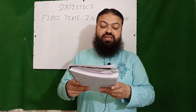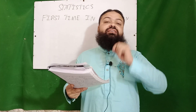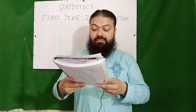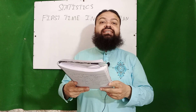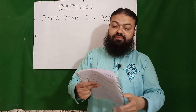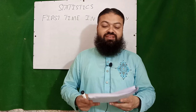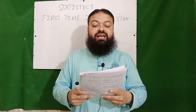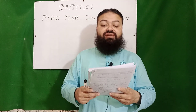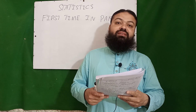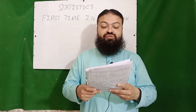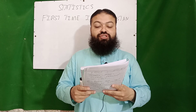Question number ten: Poisson distribution was invented by French mathematician Simon Denis Poisson in 1830; its function was developed and published in 1837. Question number eleven: normal distribution was first discovered by Abraham de Moivre in 1733.